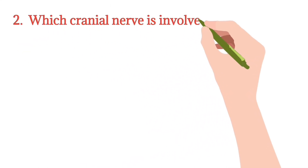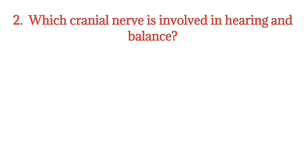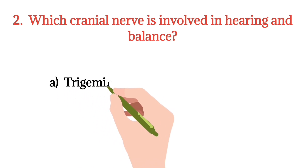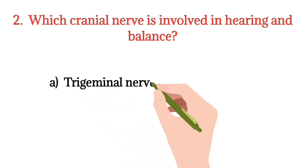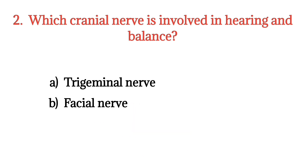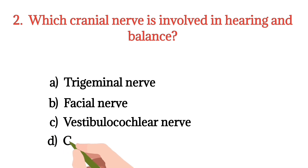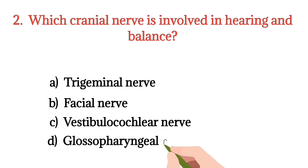MCQ number 2. Which cranial nerve is involved in hearing and balance? Option A: Trigeminal. Option B: Facial. Option C: Vestibulocochlear. Option D: Glossopharyngeal. The right option is Option C.